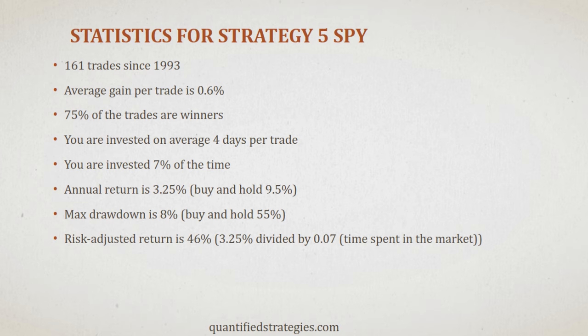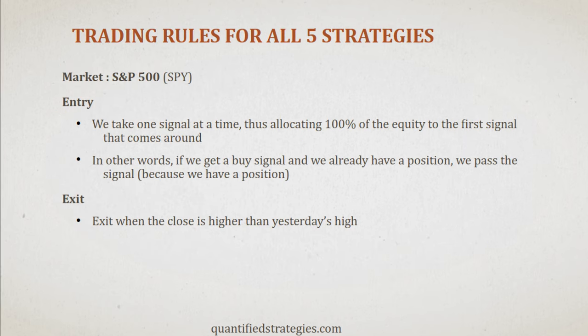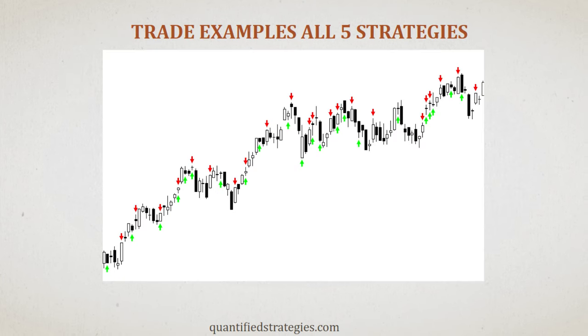We have now presented five free and proven swing strategies — let's do the final backtest of the day. We trade all strategies at the same time but allocate 100% of equity to one position, ignoring buy signals if we already have a position. Because we use the same sell signal in all five strategies, there are no conflicts with the exits. When we add all five strategies, we get a lot more trades, and in some periods you get many trades.